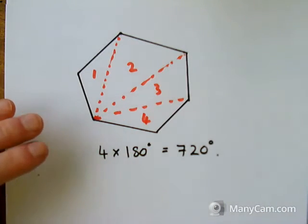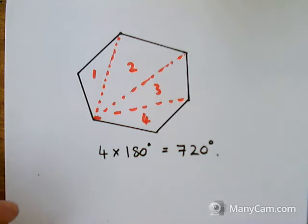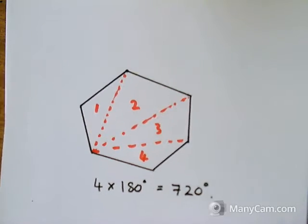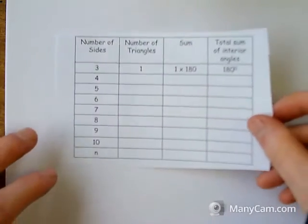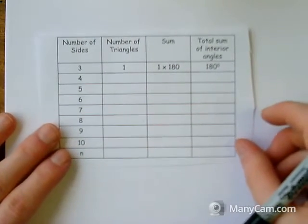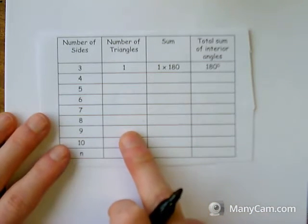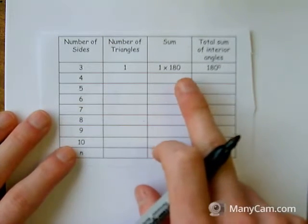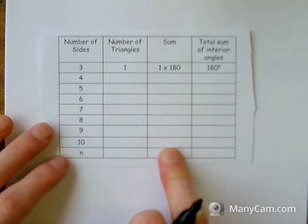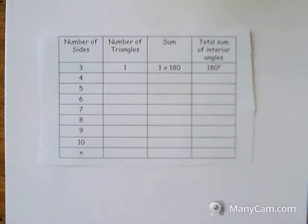So we've looked at four different polygons and how many angles are in each of those four different polygons. I'm going to use a table now to sum up what I've just said and then generalise it for how we can work out the total amount of angles in any polygon. The table has the number of sides, how many triangles the shape splits into, how I worked out the total angles, and the total amount.